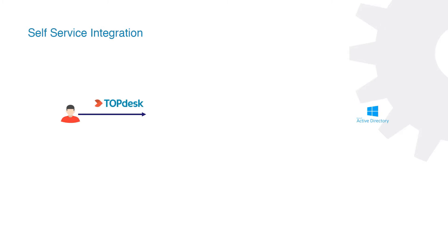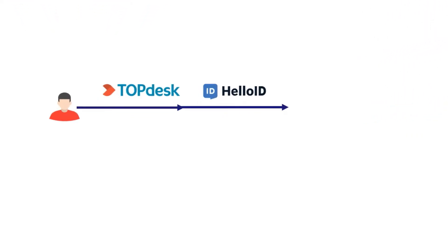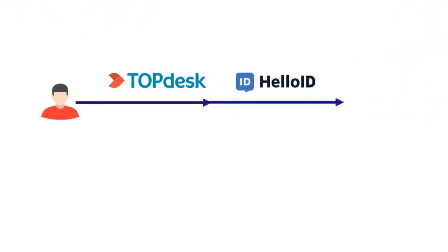Let's automate this in Topdesk via HelloID. Now the end user can simply go to Topdesk and enter the Topdesk portal where they can access HelloID. Here they can request access to applications like Adobe Photoshop. That request will be automatically sent to the approver in HelloID.